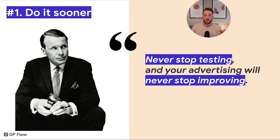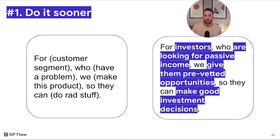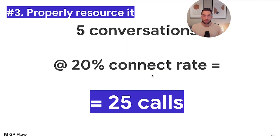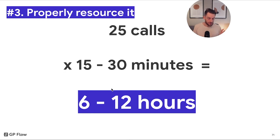So what would we do differently? Three things. The first: do it sooner. As Ogilvy said, never stop testing — advertising will never stop improving — and we did just that over the course of the program, iterating on messaging, which was beneficial not just in our script but in our overarching fund messaging. Second: get the brand right. We did a few iterations and ultimately positioned our fund as a premium brand. Third: properly resource it. Five conversations at a 20% connect rate means 25 calls. Each call averaging 25 to 30 minutes means about 6 to 12 hours of work. Recognize this isn't on autopilot — you still need to put in the work, speak to people, and build relationships.